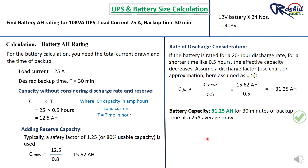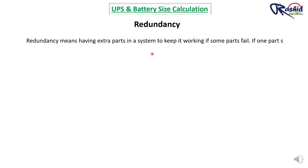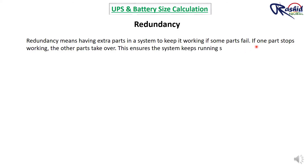So we can go with a 31.25 AH battery rating. One more parameter required when calculating UPS sizing is redundancy. Redundancy means having extra components in a system to keep it working if one part fails — if one part stops working, another takes over, ensuring the system keeps running smoothly. There are three types of redundancy.